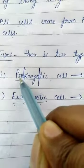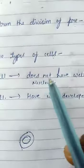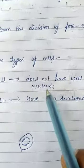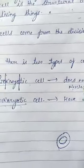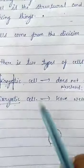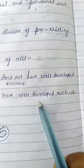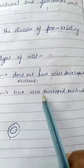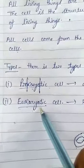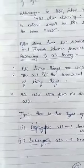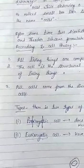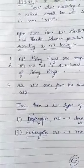Nucleus. So 'prokaryotic' means old nucleus — the cells which do not have a well-developed nucleus are known as prokaryotic cells. And eukaryotic cells have a well-developed nucleus — the cells which have a well-developed nucleus are known as eukaryotic cells. I believe you understood about cells today. This is all for cell, and I will explain more in my next video. Thank you.